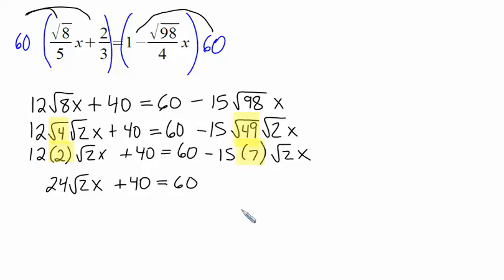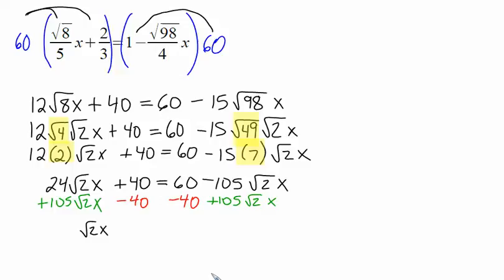15 times 7. Mental math is always good, but on a quiz or a test, it doesn't hurt to consult your calculator and make sure you don't make a typo. Now, I want to get the x's on the left, just because in this case, they will have a positive coefficient. So we add 105 radical 2x to both sides. And I'm just going to combine these in the same step this time. I want to get the 40 off the left-hand side. On the other side, 60 minus 40 is just 20.